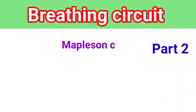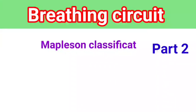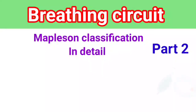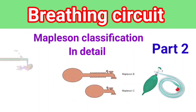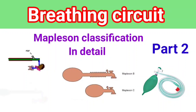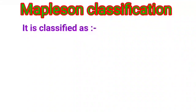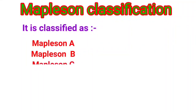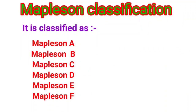Part 2: Mapleson classification in detail. It is the continuation of the breathing system presentation I uploaded two days ago. Let's start our presentation. Mapleson classification is classified from Mapleson A to Mapleson F. Now I will explain one by one.